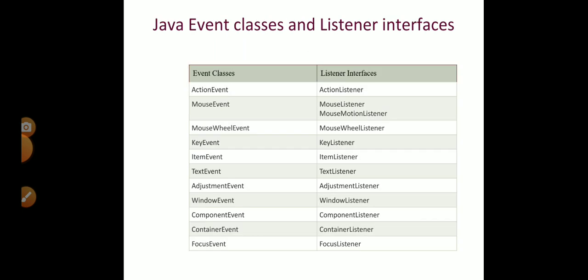These are some of the events and their listeners. For action event we use action listener. For mouse event we use mouse listener and mouse motion listener. For mouse wheel events we use mouse wheel listener. For key event we use key listener. Item event uses item listener. Text event uses text listener. Adjustment event uses adjustment listener. Window event uses window listener. Component event uses component listener. Container event uses container listener. And focus event uses focus listener.